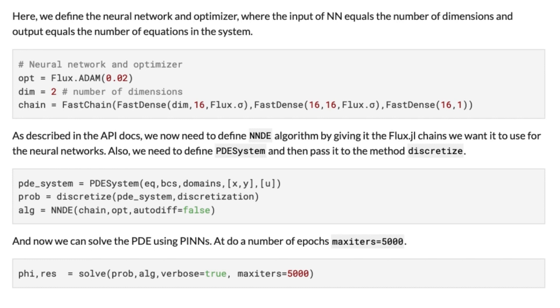The next step is to define the algorithm NNODE. For the algorithm, we should initialize neural networks. It's called chain here, and we use the Flux package and methods from Flux package: FastChain and FastDense. We initialize a neural network with three layers, where the input of the neural network equals the number of dimensions of the task, and the output is one because we solve one equation. But if we're solving a system of equations, it will equal the number of equations in the system. We also use the Adam optimizer.